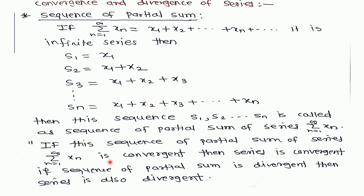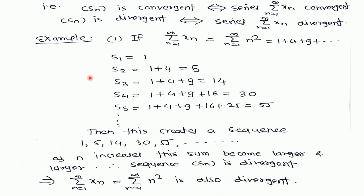If this sequence of partial sums is convergent, then the series is convergent; if it is divergent, then the series is divergent. For example, if our series is n², with terms 1 + 4 + 9 + ..., then s1=1, s2=5, s3=14, and so on, creating the sequence 1, 5, 14, 30, 55, ... As n increases, this sum becomes larger and unbounded, so the sequence sn is divergent, which implies the series n² is also divergent.